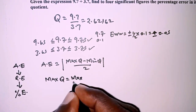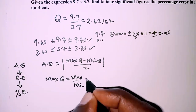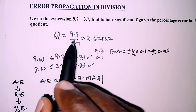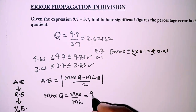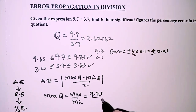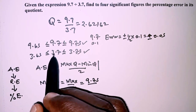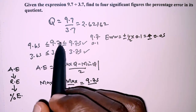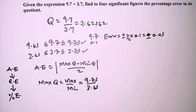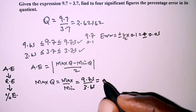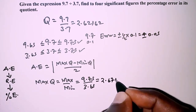The maximum quotient is obtained as the maximum value of the numerator over the minimum value of the denominator. The numerator is 9.7, so the maximum value is the upper limit 9.75, over the minimum of the denominator 3.7, which is the lower limit 3.65. This works out to 2.67123.